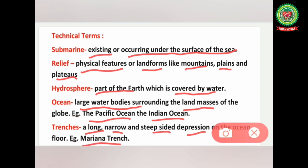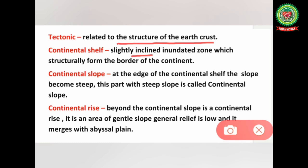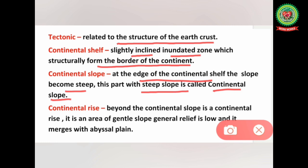An example of a trench is the Mariana Trench. Tectonic refers to the structure of the earth's crust. Continental shelf is a slightly inclined, inundated zone which structurally forms the border of the continent and the ocean. Continental slope — at the edge of the continental shelf, the slope becomes steep. Continental rise — beyond the continental slope, it is an area of gentle slope with low relief that merges with the abyssal plain.